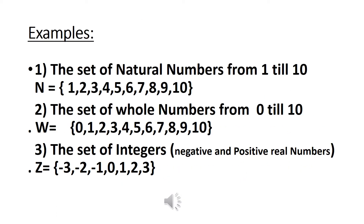Now write the examples after the definition. Example 1: The set of natural numbers from 1 to 10. Answer: N = {1, 2, 3, 4, 5, 6, 7, 8, 9, 10}.